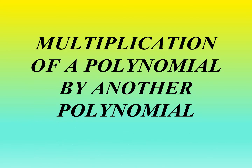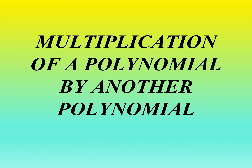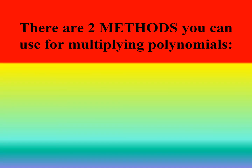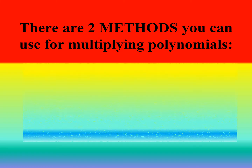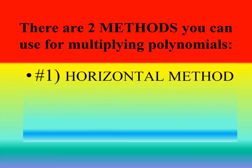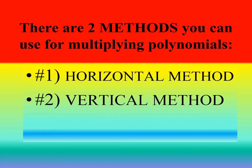After the multiplication of a polynomial by a monomial, let's proceed to the multiplication of a polynomial by another polynomial. In multiplying polynomial by a polynomial, we have two methods we can use: the horizontal method and the vertical method. We will apply these to our examples.